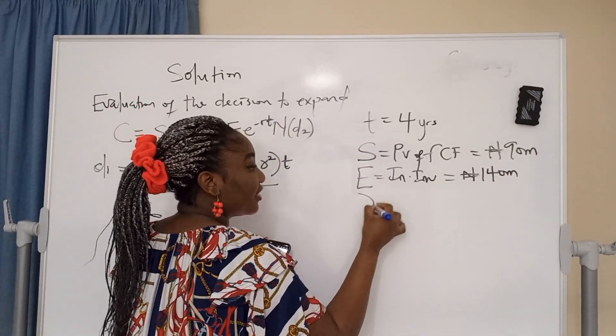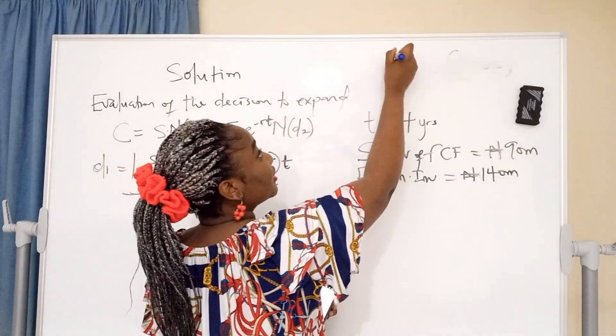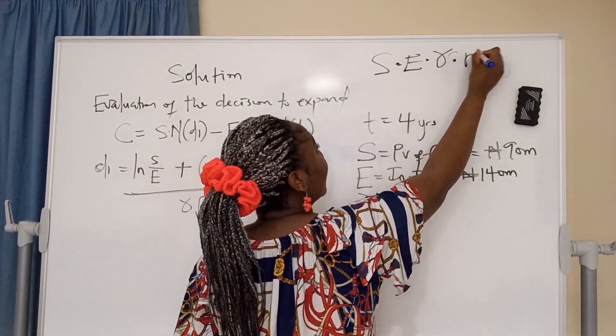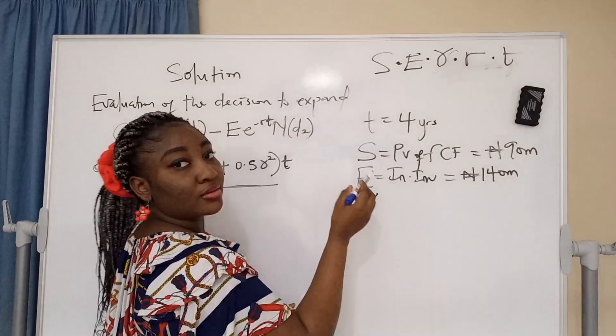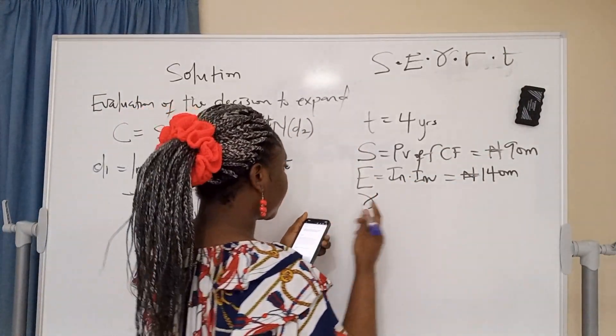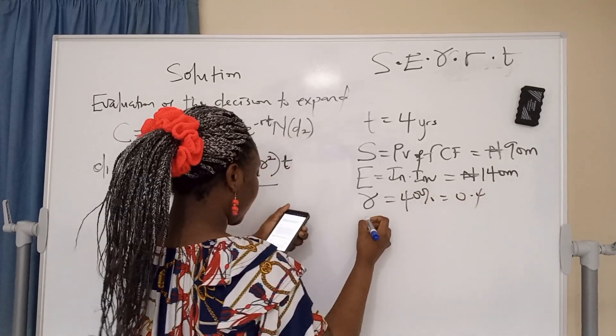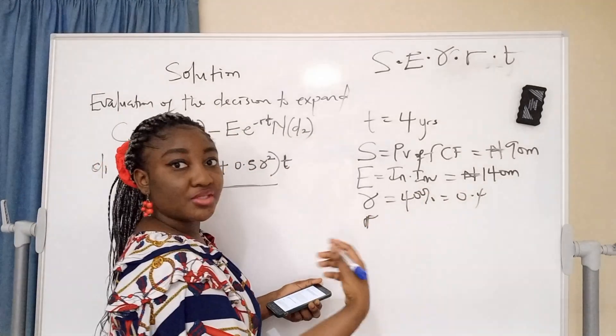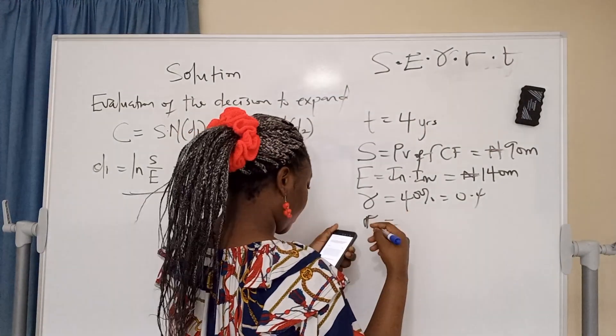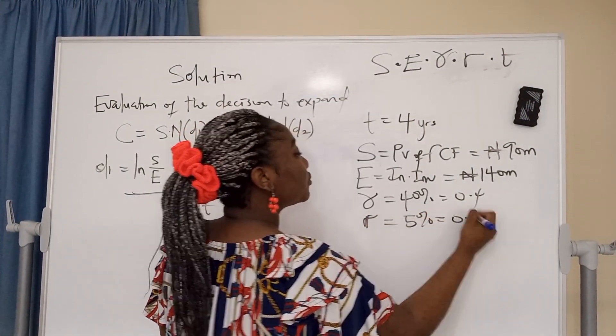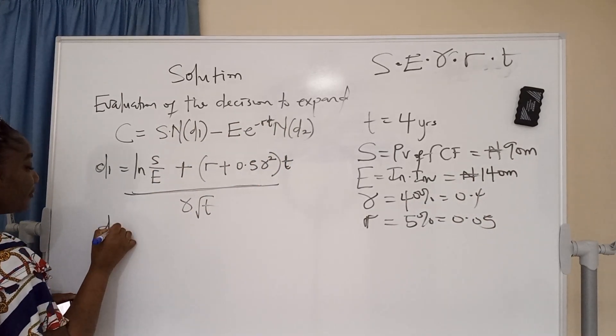The standard deviation of the project - that's another among the 5 key variables. These are the 5 key variables: S, E, standard deviation, R, T. 40% for standard deviation, that is 0.4. Then R, your interest rate, risk-free rate of return is 5%, that's 0.05. Once you have all this, you put your variables in.